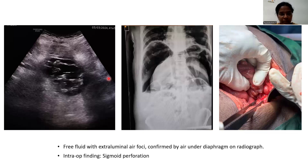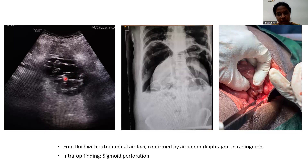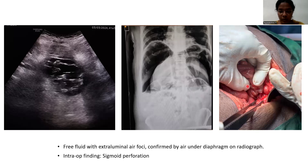This patient had, on ultrasound, a loculated collection with dirty shadowing and extraluminal air. On x-ray, we were able to find air under the diaphragm, and it came out to be sigmoid colon perforation.